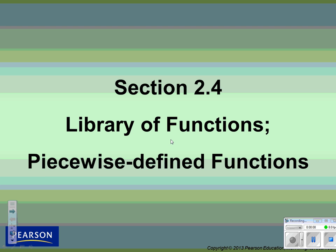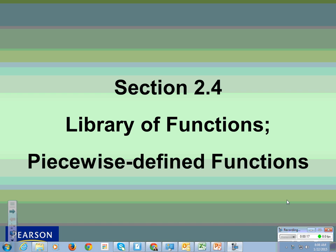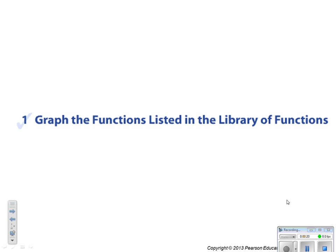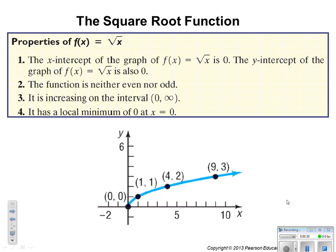This is Pre-Calculus section 2.4, Library of Functions and Piecewise Defined Functions. We're going to graph the functions listed in the library of functions. First, we'll look at the square root function. The x-intercept is at 0, the y-intercept is also at 0. It is neither even nor odd. It is increasing from 0 to infinity and has a local minimum at 0.